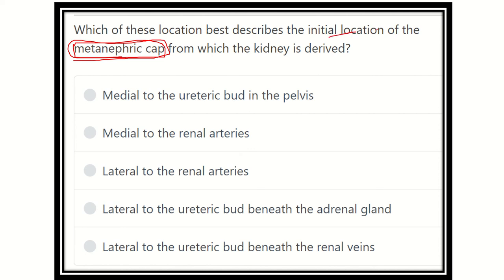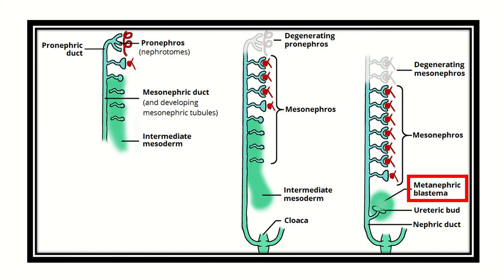Here we can see a picture showing the metanephric cap, also called the metanephric blastoma. In the third picture we can see the metanephric blastoma. Initially it was absent, and then it appeared in the lower part of the mesonephric duct. Finally, the ureteric bud is derived here, and this is the metanephric blastoma located in the lower part.